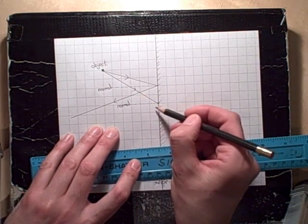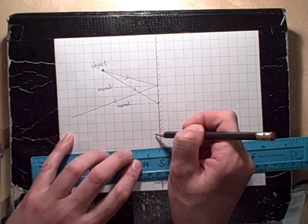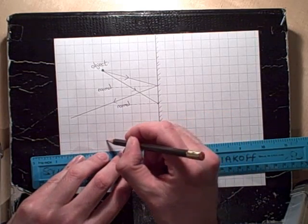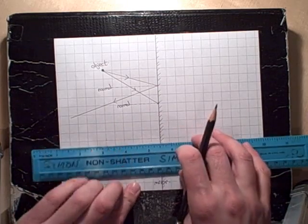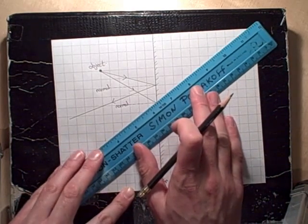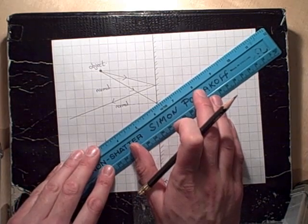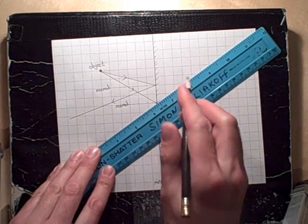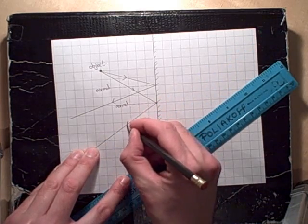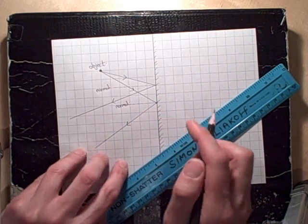And then I need to go one, two, three, four squares down, one, two, three, four, five, six out. And my reflected ray must therefore pass through this point, which makes sure I keep the angle of incidence equal to the angle of reflection. So now I've drawn on what the light rays actually do.